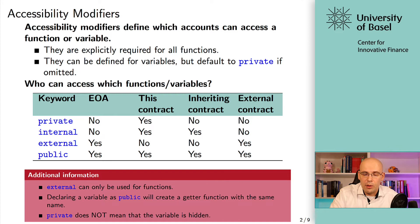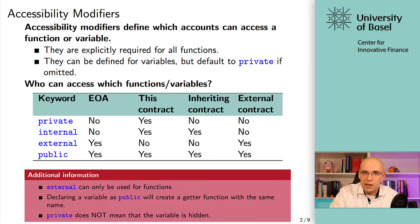I'm just going to mention that one more time, because it's a misconception many people have. Private does not mean that the information cannot be accessed by people — it just means it cannot be accessed in a specific context. But the information is still readable, you can still get it out, and you cannot hide anything on the blockchain. That's something you have to be aware of.